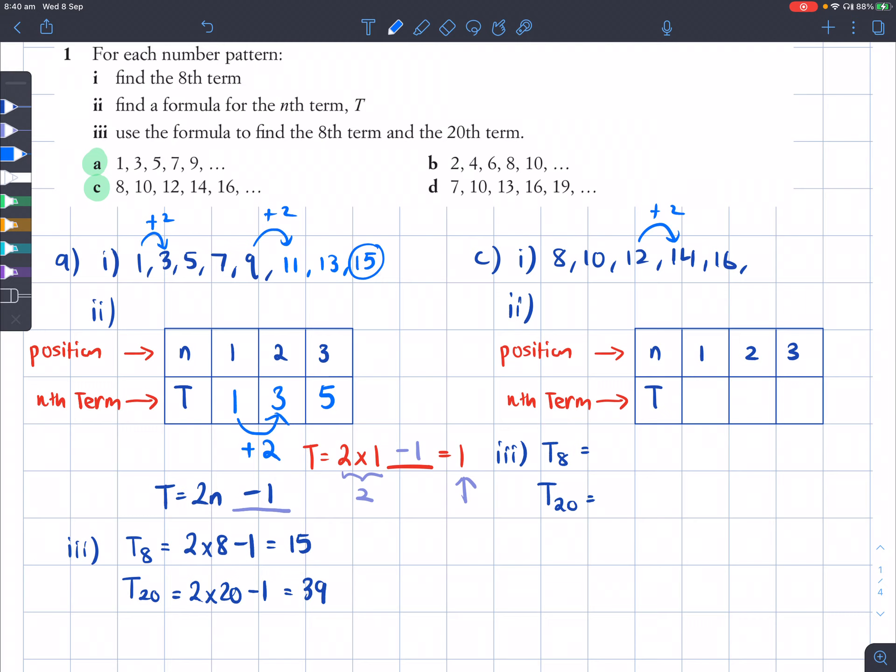So if it goes up by 2, then I guess the next number will be 18, then 20, then 22. And then 22 would be my 8th term.